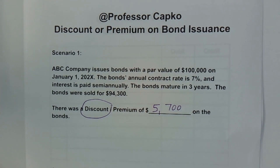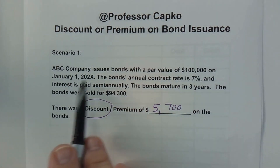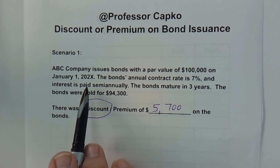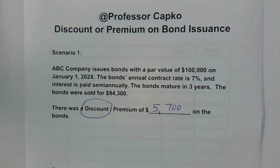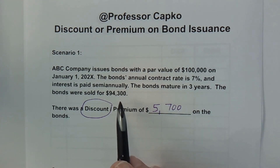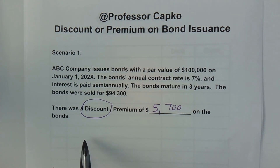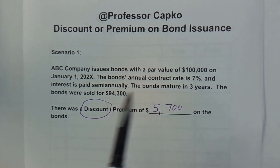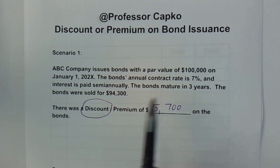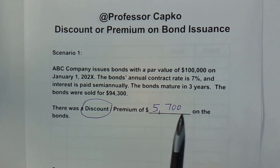This is the information from that video and we had two scenarios. In the first scenario, ABC Company issued bonds with a par value of $100,000 on January 1, 202X. The bonds had a contract rate, interest was paid semi-annually, they mature in three years, and the bonds were sold for $94,300. Because it was selling for less than the face value or par value, it was a discount — the difference between $100,000 and $94,300 is $5,700, so that was the amount of the discount.